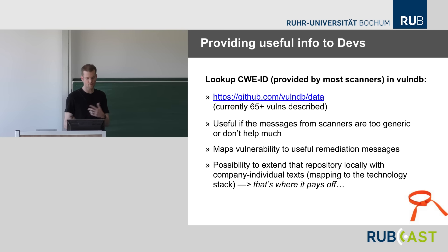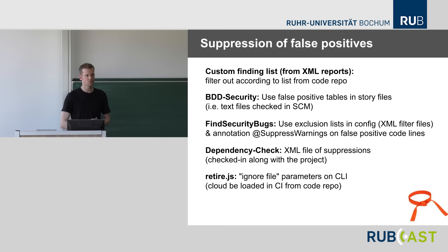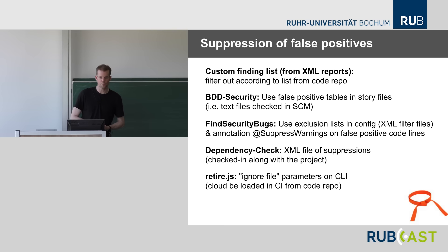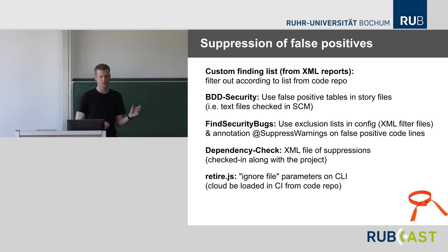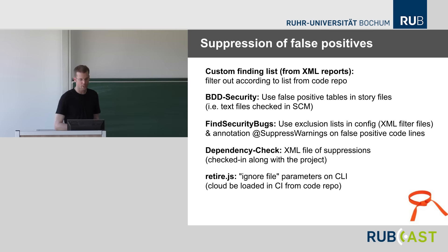For providing useful remediation information to developers, there's the VulmDB project on GitHub — currently covering 65+ vulnerabilities — which can be used as a starting point for custom remediation information. You can clone it, extend it with your own custom descriptions guiding developers correctly, and use it as the basis for customized HTML reports. Also, respect suppression mechanisms — for BDD Security a text-based false-positive file checked into the repo; for FindSecurityBugs a @SuppressWarnings annotation on false positive code lines; for Dependency Check an XML suppression file; similarly for RetireJS.